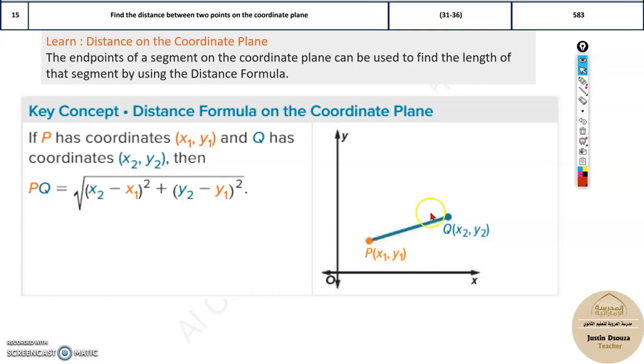So distance between any two coordinate points, I mean two points in a coordinate plane, is given by, in a coordinate plane, you will have x and y.